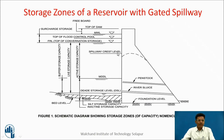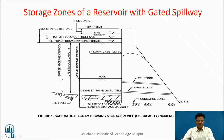For a gated spillway, the spillway gates will be up to a certain level, and thereafter you can have the maximum water level, then the spillway crest level. The full reservoir level corresponds to the conservation storage, and this is the top flood control pool. This is the surcharge storage in this case.